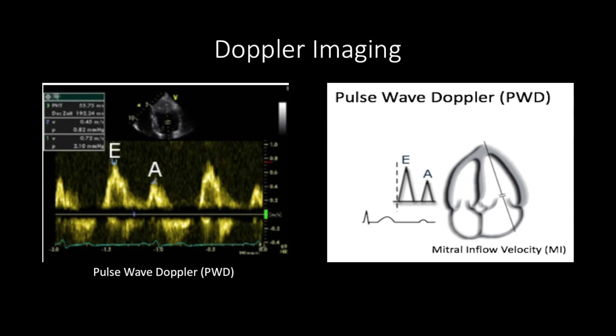To do this, obtain the apical 4-chamber view on ultrasound, then press the Doppler button. Press PW and place the indicator on the center of the anterior leaflets of the mitral valve, then press start. The E wave gives velocities of blood flowing into the left ventricle during left ventricular relaxation, while the A wave gives velocities from atrial contraction. Sometimes you won't see a clear A wave due to atrial fibrillation, tachycardia, or very severe presentations of acute heart failure, but the E wave you will always see.